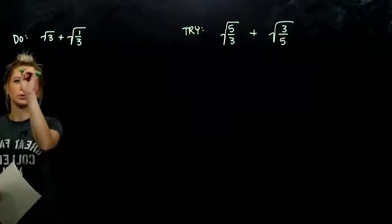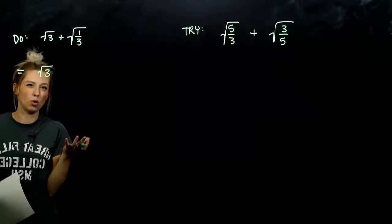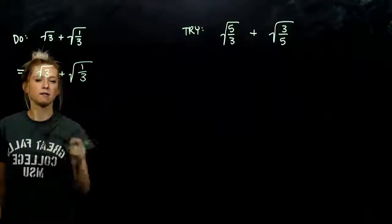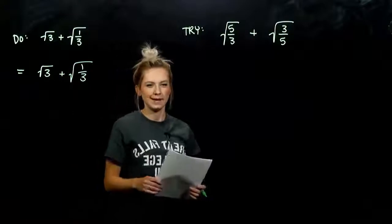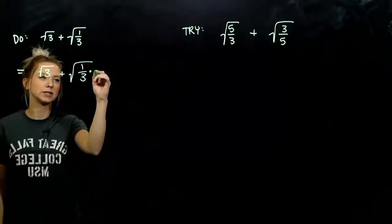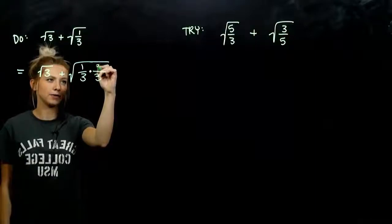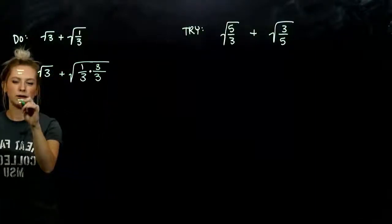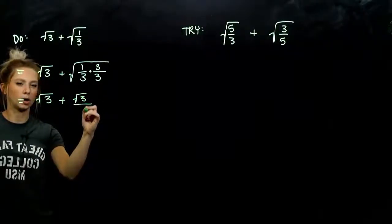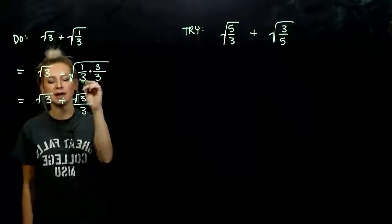Let's take a look at the first one. Root 3 already has a rational denominator — we could write it over 1 without changing anything. But over here, I have square root of 3 down below. What do I need to multiply 3 by to get a perfect square down there? 3. And whatever I do to the bottom, I have to do to the top. Square root of 9 is 3 — rational denominator.